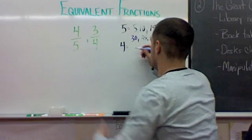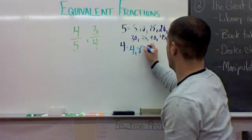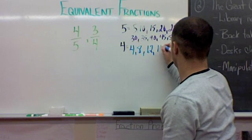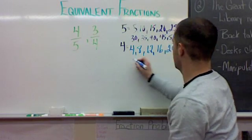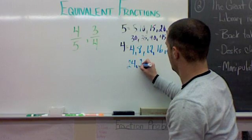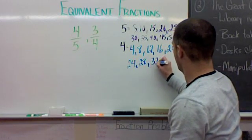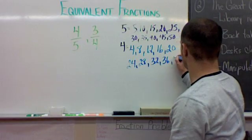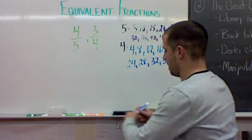For four, let's go. We've got four, eight, twelve, sixteen, twenty, twenty-four, twenty-eight, thirty-two, thirty-six, and forty. Alright.